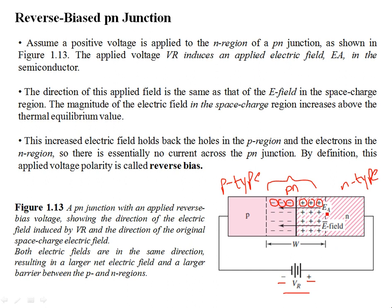You already have an electric field which is holding back the diffusion of holes from the P-region to the N-region. The electrons cannot go on diffusing towards the P-type region because of the force they experience due to the established electric field from the uncovering of ions. Similarly, holes do not diffuse further into the N-type region because of the force established by the E-field.